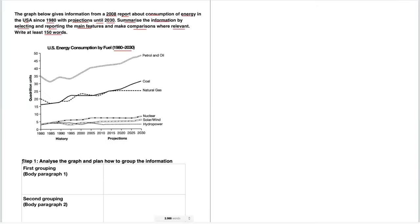Now we're looking at step one — analyzing the graph and planning how to group the information. You'll notice I have a first grouping and a second grouping in my outline. I'm going to designate the first grouping to body paragraph one and the second grouping to body paragraph two. For now, just pay attention to how we're going to group the information; I'll show you the outline in just a bit.